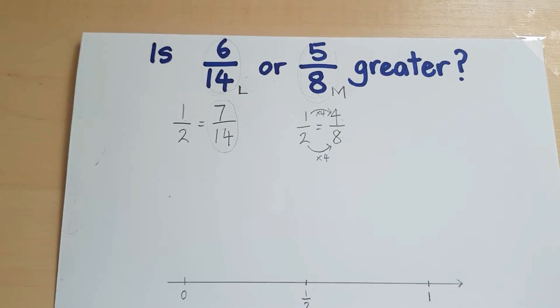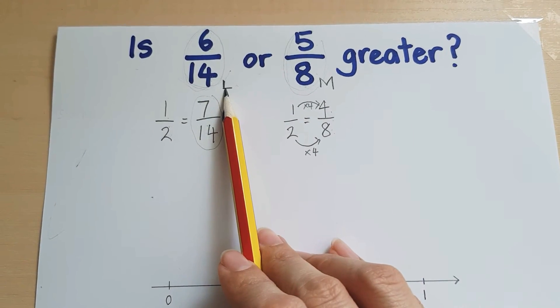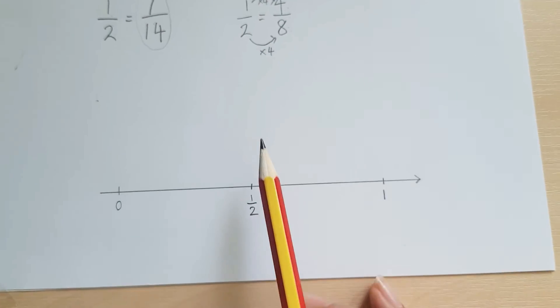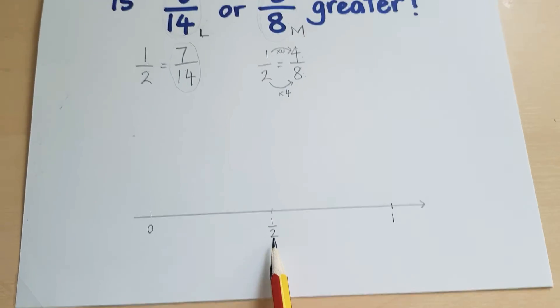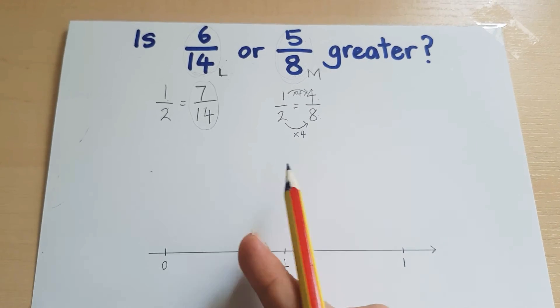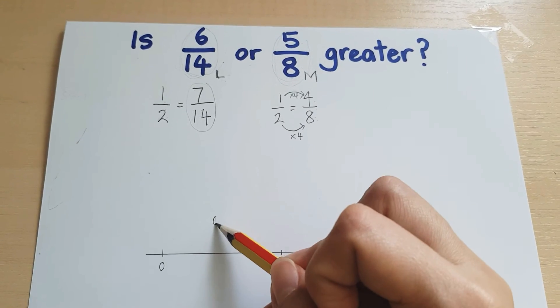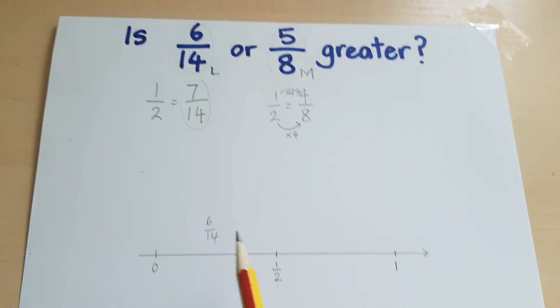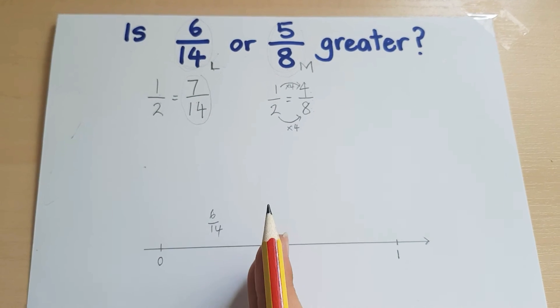Now that I have established and compared it with half, I know that 6/14 is less than half. So if I have a number line, half is here, and less than half would be on the left-hand side. So I'm going to put 6/14 somewhere there. I do not know exactly where it is, but I know it's on the left-hand side.